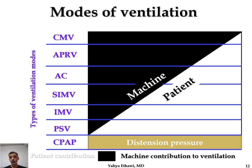PSV — pressure support ventilation — is like assisted control. The difference is you give a wide inspiratory time and the patient can decide how much inspiratory time they want. So PSV is like assisted control in that it provides mandatory backup and assists spontaneous breaths, but it is more physiological because in assisted control the inspiratory time is fixed, while in PSV the patient can determine the inspiratory time up to the maximum you set.